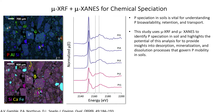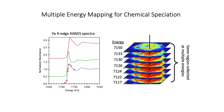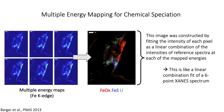What if we want to look at the speciation of an element across the entire two-dimensional area of a sample rather than at select points? In that case we can use multi-energy mapping. Multi-energy mapping involves collecting the same region of interest at several different energies across the absorption edge of an element of interest. We then take that stack of maps and obtain the chemical form for every pixel by fitting each pixel's intensity as a linear combination of reference spectra intensities at each of the mapped energies — essentially a linear combination fit of a six-point XANES spectrum for each pixel.